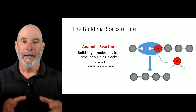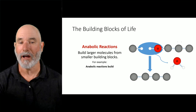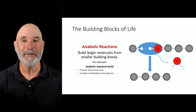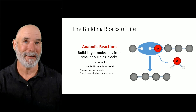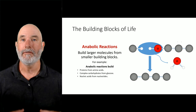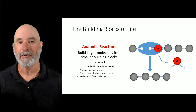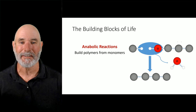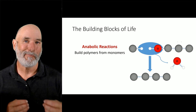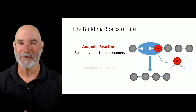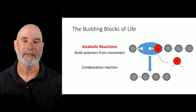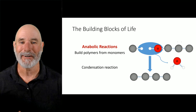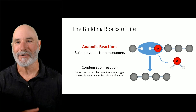In contrast, we have anabolic reactions, where we build larger molecules from smaller building blocks. Anabolic reactions build proteins from amino acids and complex carbohydrates from glucose — so starch, glycogen, and cellulose are made from glucose. You can also replicate DNA or make RNA from individual nucleotides, and make fats from smaller molecules, especially ones from the breakdown of carbohydrates. Anabolic reactions build polymers from monomers. We call this a condensation reaction because when two smaller molecules combine, water comes out of the reaction.